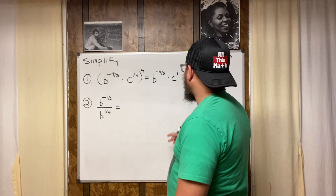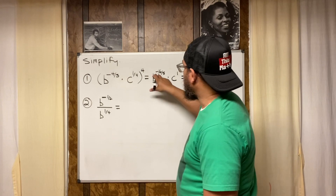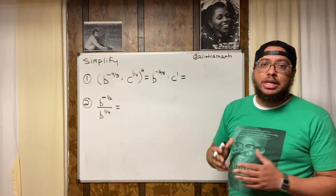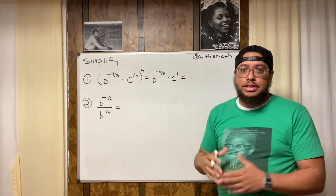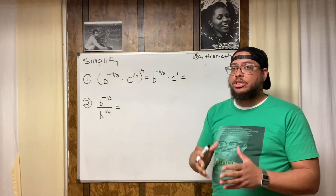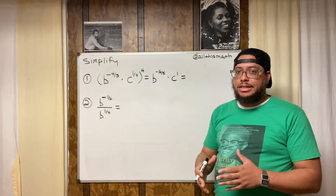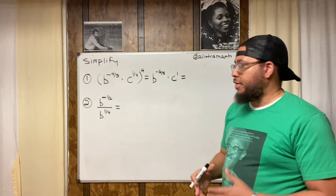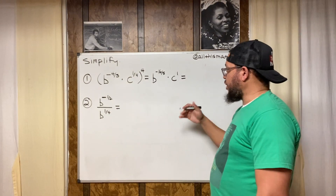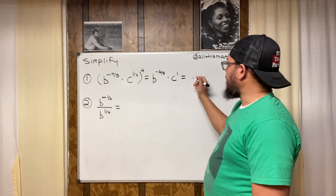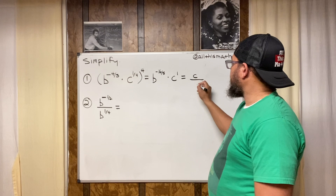Because the exponent on b is negative, we use the negative exponent rule. Your textbook will likely expect answers with no negative exponents. To eliminate negative exponents, create a fraction and move any term with a negative exponent to the denominator.